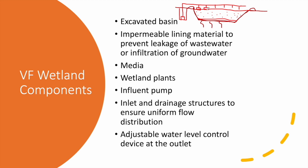The wastewater then flows vertically through the treatment media and exits through a perforated pipe by gravity. Beside every wetland, we have a water level control structure to control the water level of the wetland. We have already covered this device in detail in the horizontal flow wetland lecture.